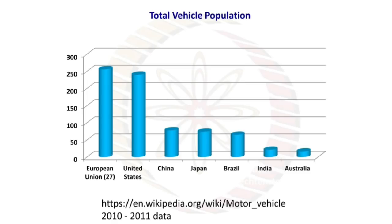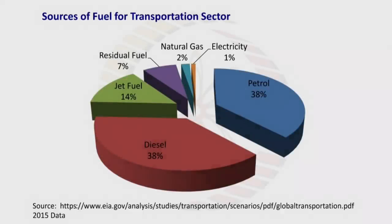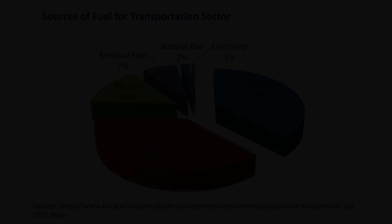For the transportation sector's fuel sources, most fuel comes from diesel and petrol at 38% each, followed by jet fuel at 14%, residual fuel at 7%, natural gas at 2%, and electricity at 1%.